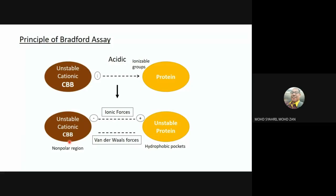This binding between the protein and Coomassie Brilliant Blue makes them stable. When the Coomassie Brilliant Blue is stable, it is no longer reddish — it turns bluish. This blue color depends on the amount of protein in the solution: a small amount of protein gives a light blue color, while more protein gives a darker blue. The darker the blue, the more protein is present. This is the main principle of the Bradford assay.